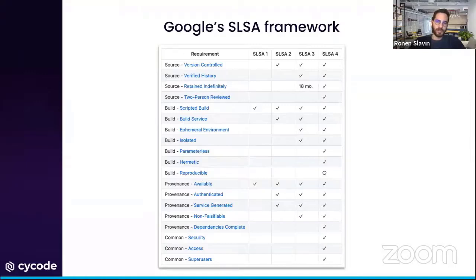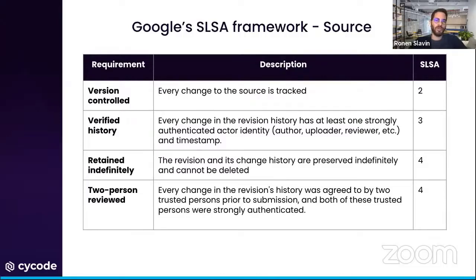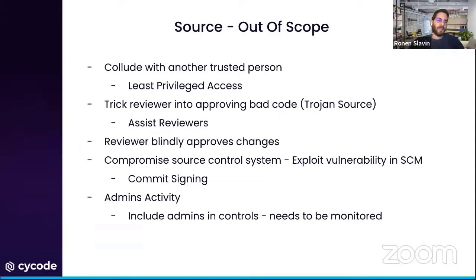Looking at source requirements: using a version control system is a requirement for SALSA level 2. If the history can be verified — meaning each change can be tied to an authenticated user — that entitles you to SALSA level 3. If history is retained indefinitely and two-person reviews are enforced, those are the extra requirements for SALSA level 4.